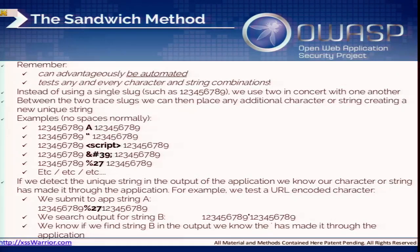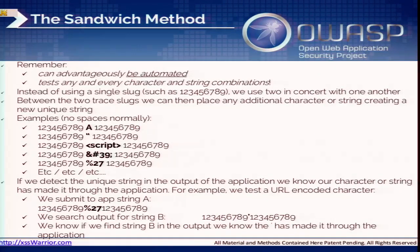This is the sandwich method I described earlier. You take a character or string, put it between two unique identifiers to create a unique string, and find out where it ends up on the other side. Because you end up building tables, you can test for encoding and any type of transformation the application applies. You can test to see whether one encoding becomes a single quote somewhere later on.